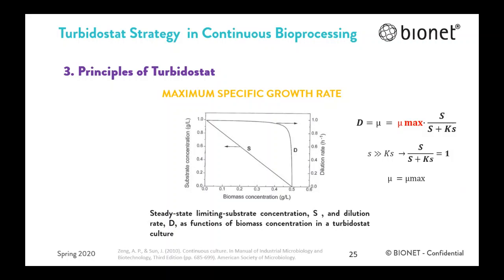In principle, turbidostat culture is suitable for the cultivation range in which the biomass concentration varies significantly with changes in dilution rate — such as near the critical dilution rate as shown in the figure. This is of particular interest because operation near the maximum growth rate can be very unstable in a chemostat. The turbidostat also provides a means of maintaining cultures in a constant environment with an excess of substrate. Since the growth rate is not fixed, the system will select for fast-growing strains, and increases in the maximum growth rate will result from both selection of genetically different organisms or mutants and the adaptation of cellular metabolism. According to the Monod equation, if the concentration of the limiting substrate is much higher than its constant, the specific growth rate will be close to the maximum value.